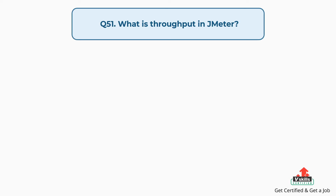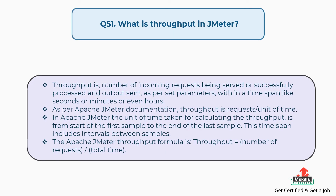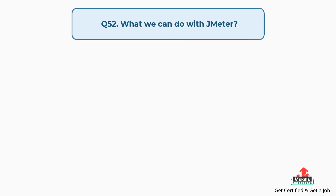Question 51: What is throughput in JMeter? Throughput is the number of incoming requests being served or successfully processed within a time span such as seconds, minutes, or hours. In Apache JMeter, throughput is measured as requests per unit of time, from the start of the first sample to the end of the last sample, including intervals between samples. The JMeter throughput formula is: Throughput = Number of Requests / Total Time.